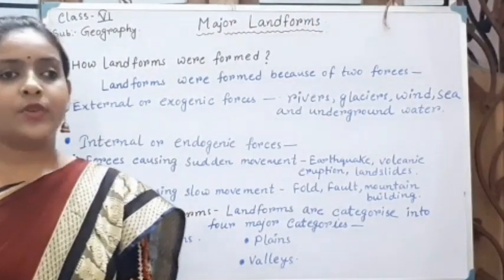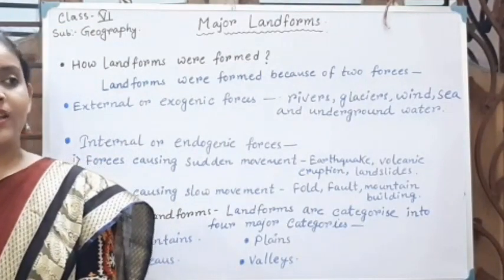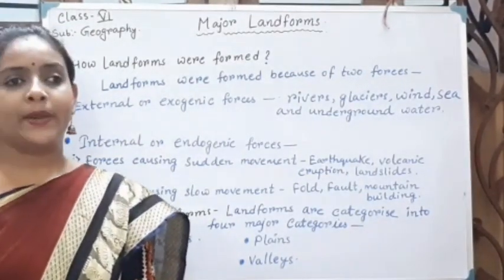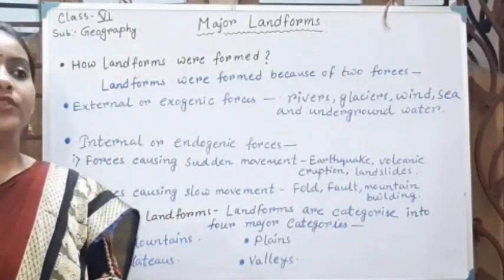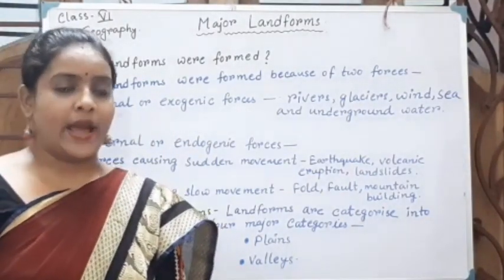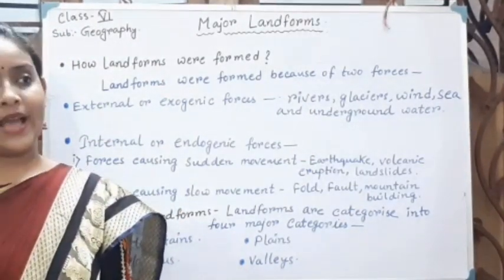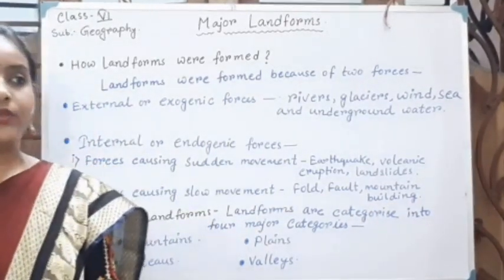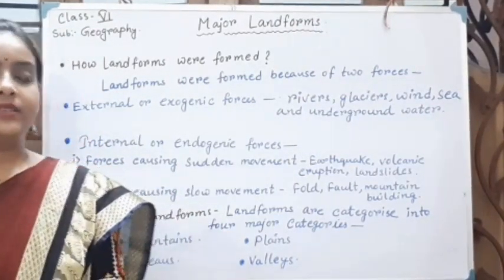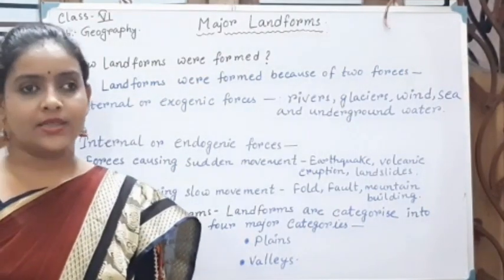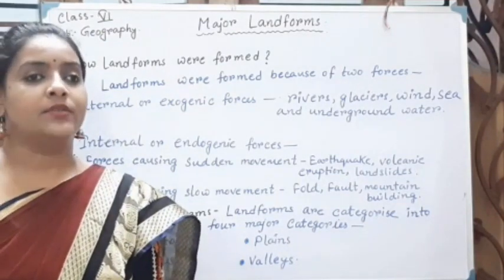We know that Earth is the only planet where life exists. Why? Due to the presence of three things: air, water, and land. The sphere of Earth is called the atmosphere, the sphere of water is called the hydrosphere, and the sphere of land is called the lithosphere. Lithosphere is comprised of rock and soil, and we are living on the lithosphere.